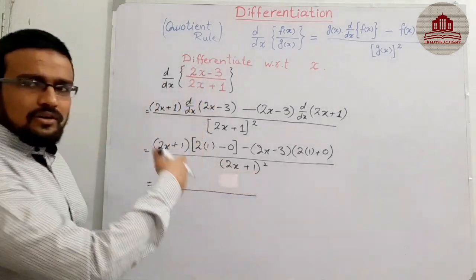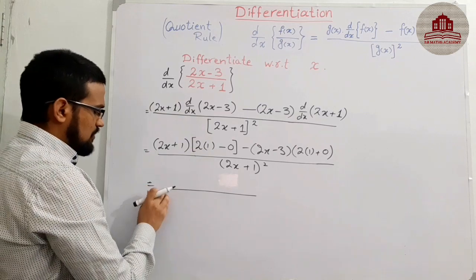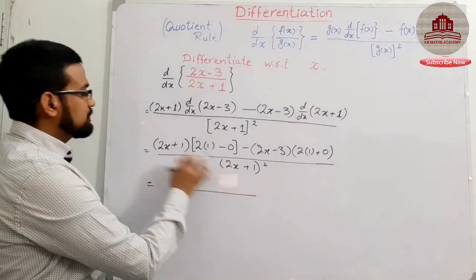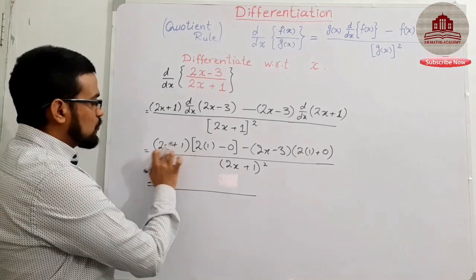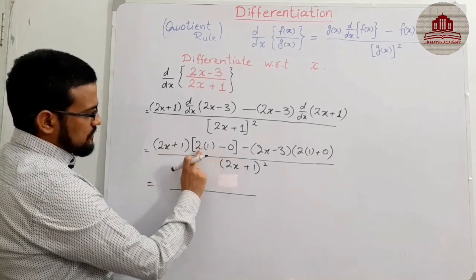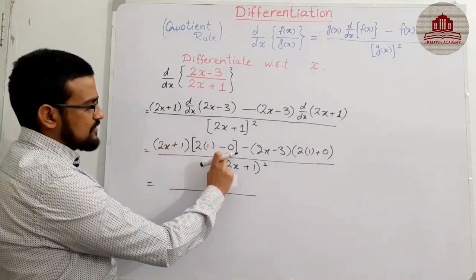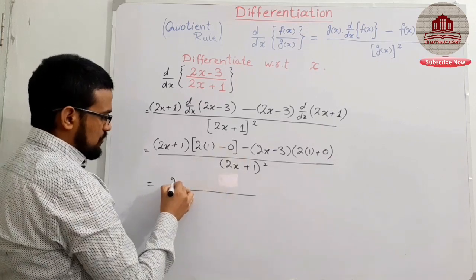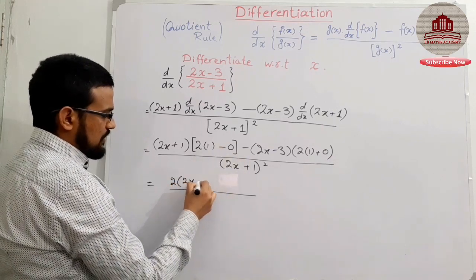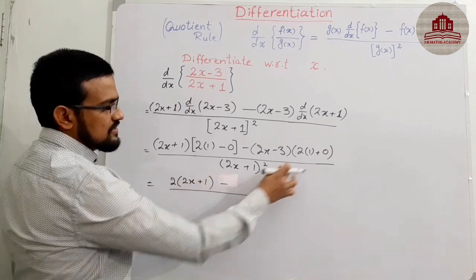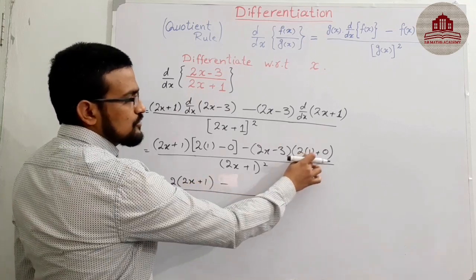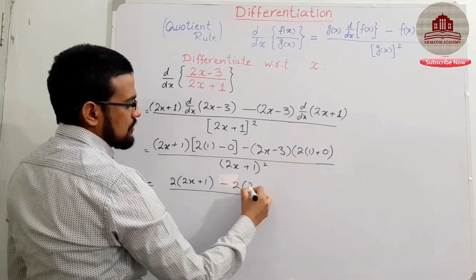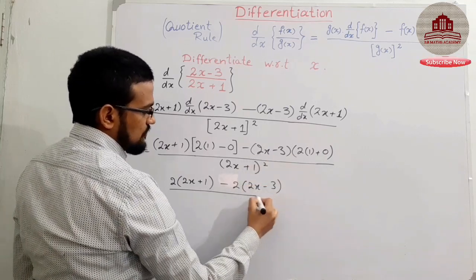Don't open the bracket yet — maybe it will cancel out at the last step, and if needed then we have to open it. So 2x + 1 and this gives us: 2 × 2 = 4, minus 1 × 2 = 2, minus 0 × 2. So 2 into 2x plus 1, minus 2 into 2x, plus 0 × 2. That gives us 2, 2, and 2x minus 2.